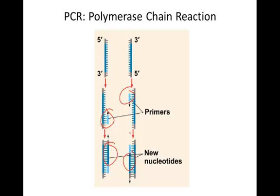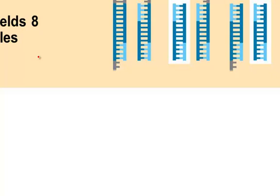After one cycle, the original DNA strand has become two strands. Because the number of strands doubles with every cycle, the amount of DNA quickly increases.